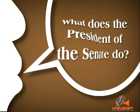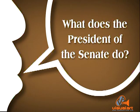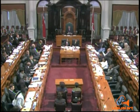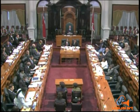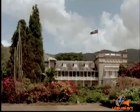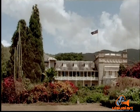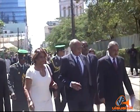What does the President of the Senate do? The President of the Senate presides over sittings and chairs committees of the Upper House. He also acts temporarily as President of the country where the office is vacant or when the President is unable to perform his functions by reason of absence or illness.